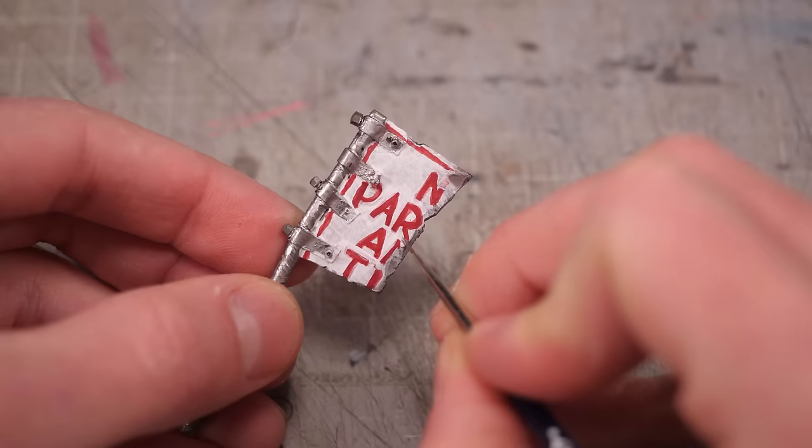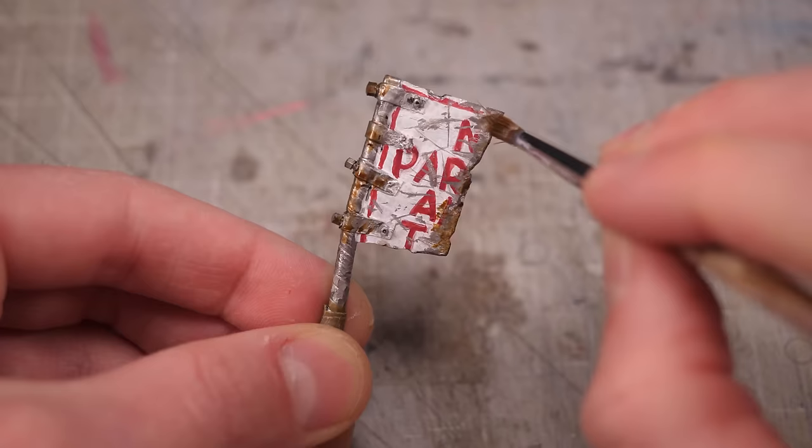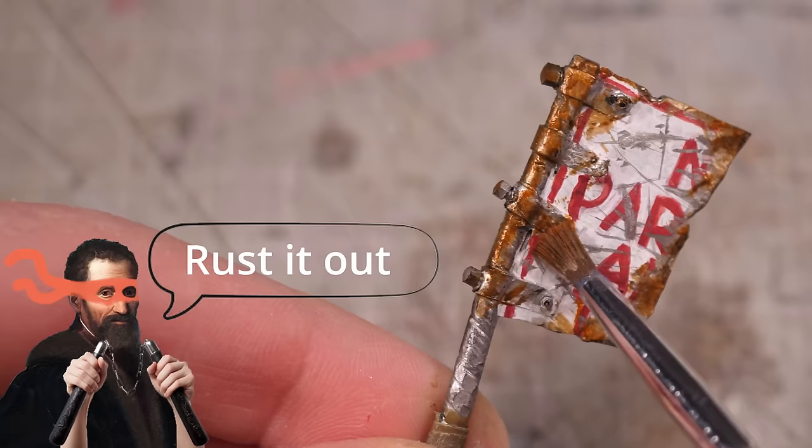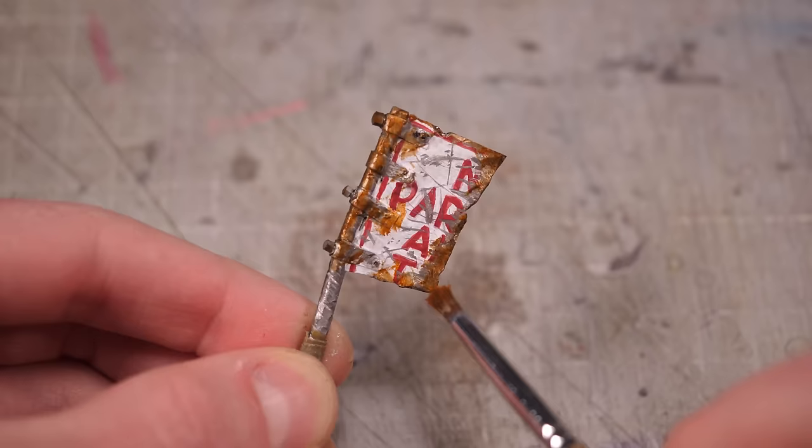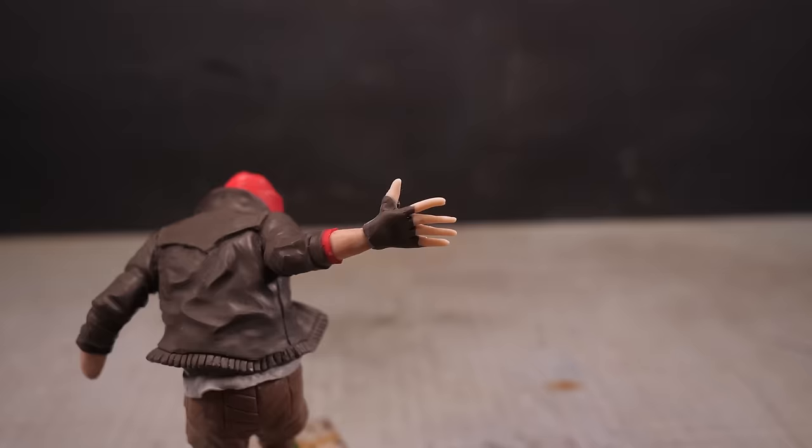So I'll fix my mistakes by adding tons of weathering and damage and rust. I believe it was Michelangelo who said when in doubt rusted out. Otherwise that's my off-brand Mjolnir ready to be summoned to Aiden's outstretched hand.